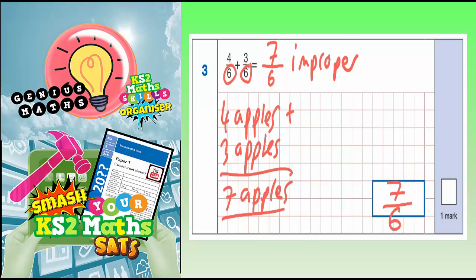And to do that, you would do 7, whatever's on the top, divided by whatever's on the bottom. So 7 divided by 6. Well, 7 divided by 6 is 1 whole lot of 6 in there, remainder 1. It's 1 remainder 1.